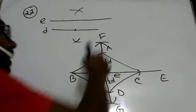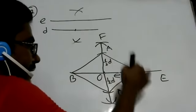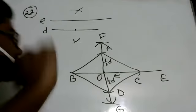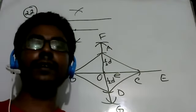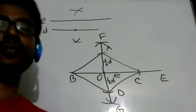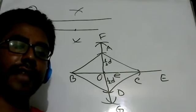Then join A comma B, A comma C, C comma D, B comma D. So ABCD is our required rhombus. Thank you so much.